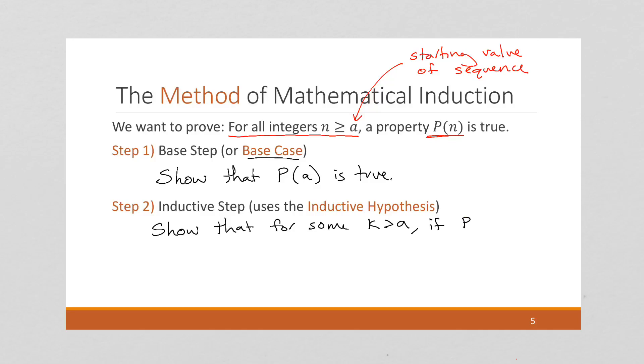If P of K is true, then P of K plus 1 is true. So this K and K plus 1, these are indices into our sequence.